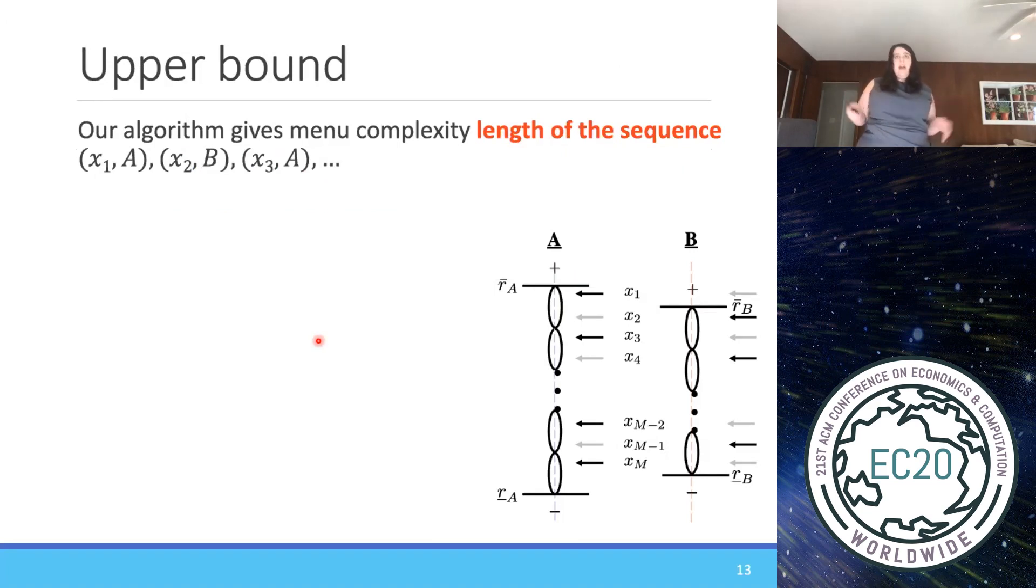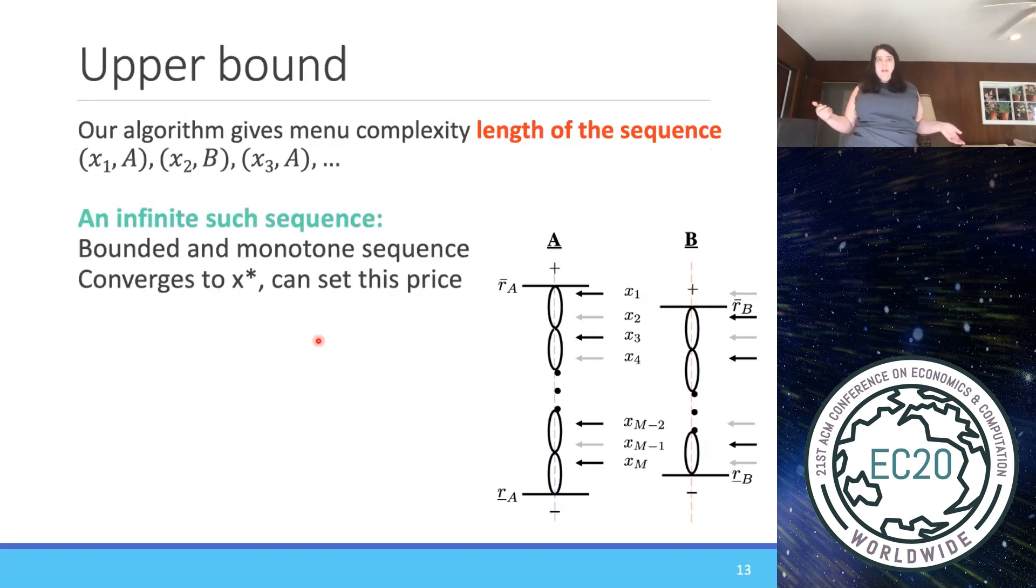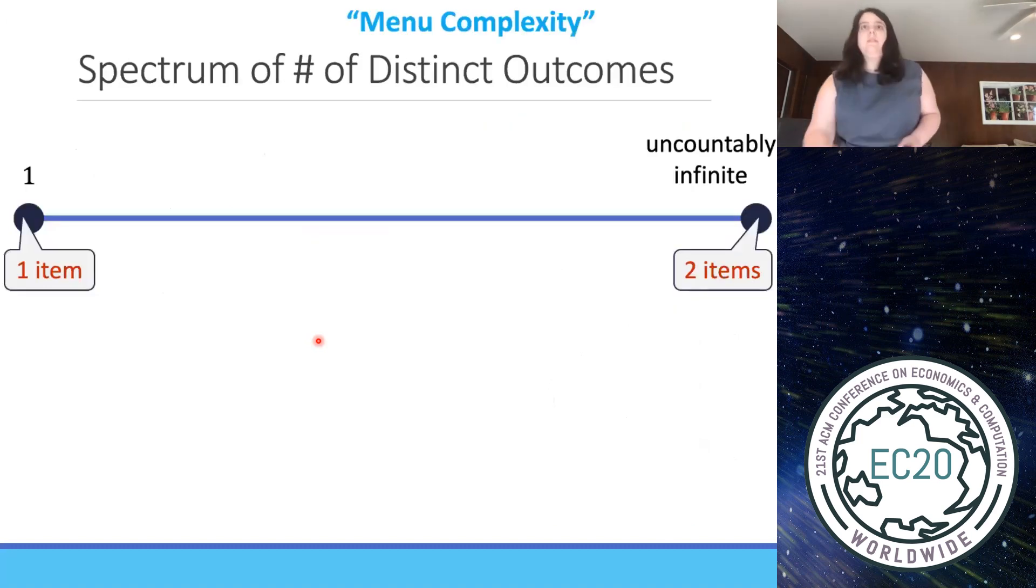Finally, I told you that it's always finite, even though it's unbounded. This is just for the three item case. And here's a cute argument why. So this algorithm said that the menu complexity was the length of the sequence of x1, x2, x3 down to m. Why can't it be infinite? If it were infinite, it's a bounded and monotone sequence. And this converges to some point x star, and we could just set that price. So it aborts and it doesn't turn out to be infinite and it turns out to just be a single price.